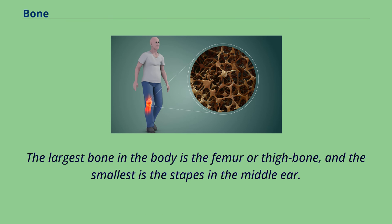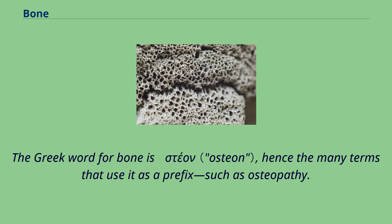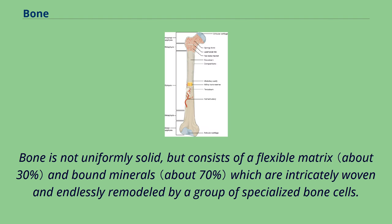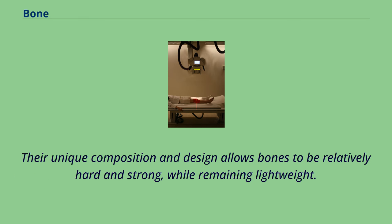The largest bone in the body is the femur or thigh bone, and the smallest is the stapes in the middle ear. The Greek word for bone is 'osteon,' hence the many terms that use it as a prefix, such as osteopathy. Bone is not uniformly solid, but consists of a flexible matrix and bound minerals which are intricately woven and endlessly remodeled by specialized bone cells. Their unique composition and design allows bones to be relatively hard and strong, while remaining lightweight.